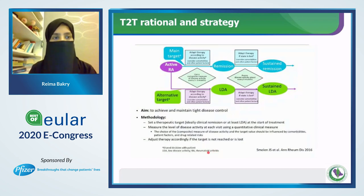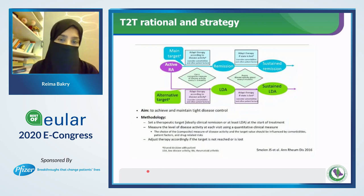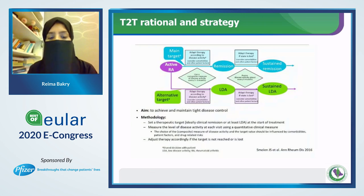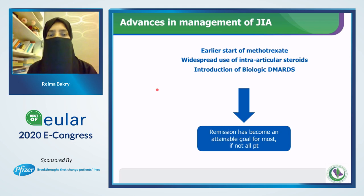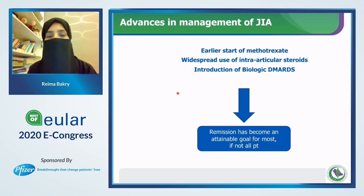The treat-to-target strategy: when a patient presents with chronic arthritis, we should aim for our target — to achieve and maintain tight disease control and set the therapeutic target, whether remission or low disease activity depending on conditions, and adjust therapy accordingly if the target is not reached or lost. Early advances in JIA management include early starting of methotrexate, wide use of intra-articular steroids, and introduction of biologics and DMARDs — remission has become an attainable goal for most, if not all, patients.